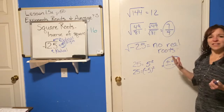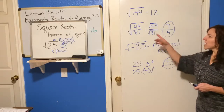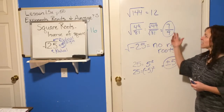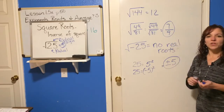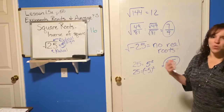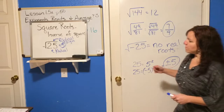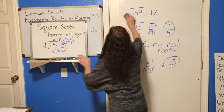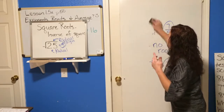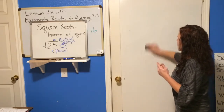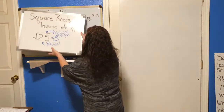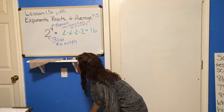So when you use an exponent, you just multiply over and over again. Just like with adding we have subtracting to undo it, and with multiplying we have dividing to undo it — with exponents we have square roots. A square root is the inverse of a square, and the inverse simply means the opposite. This little division-looking sign is actually a radical sign.